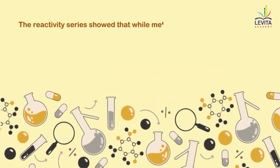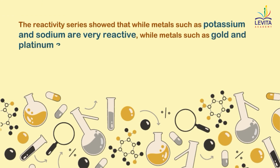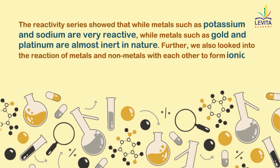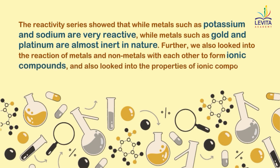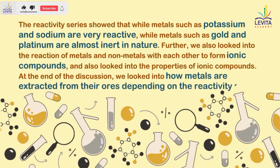we observed that some metals are more reactive than other metals and thus reached the reactivity series of metals. The reactivity series showed that while metals such as potassium and sodium are very reactive, metals such as gold and platinum are almost inert in nature. Further, we also looked into the reaction of metals and non-metals with each other to form ionic compounds and also looked into the properties of ionic compounds. At the end of the discussion, we looked into how metals are extracted from their ores depending on the reactivity series.